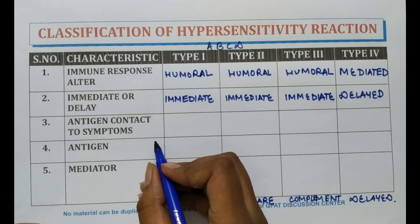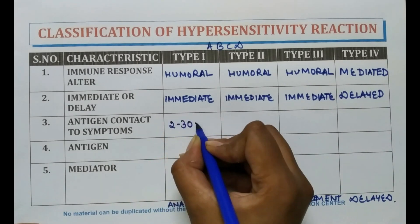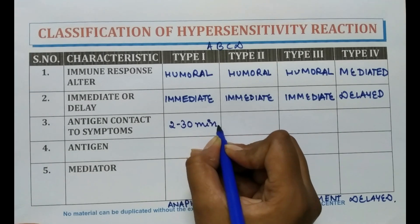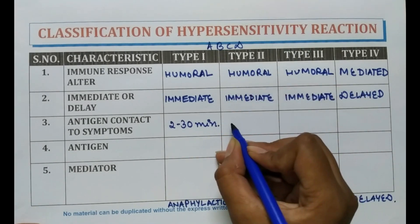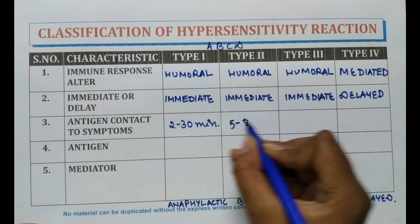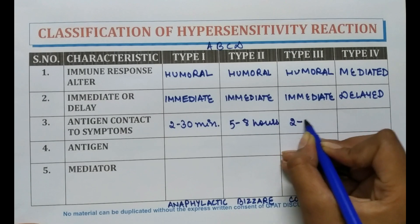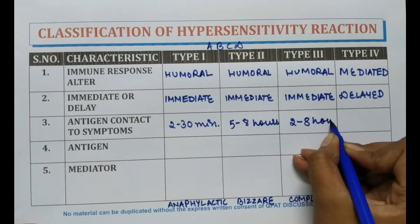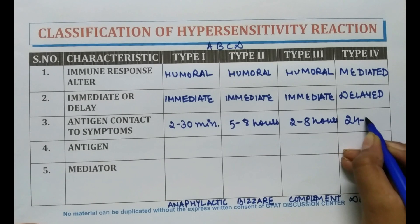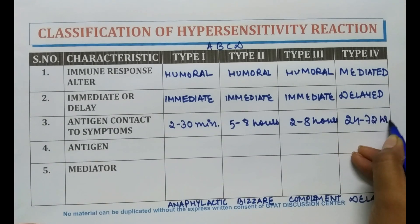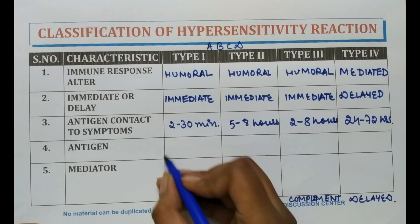About the antigen contact time: in Type 1, it is 2 to 30 minutes from antigen contact to symptom. In Type 2, it is 5 to 8 hours. In Type 3, it is 2 to 8 hours. And in Type 4 reaction, it is 24 to 72 hours.